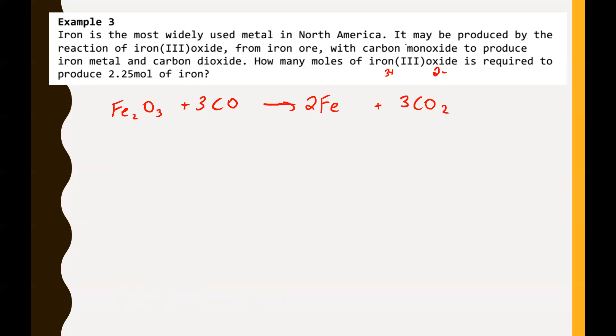We're looking for how many moles of iron three oxide will be required to produce 2.25 moles of iron. We know we have 2.25 moles of this guy right here, and that's going to be the equivalent of two parts. We only have one part of iron three oxide. So to find how many moles of iron three oxide, we just have to take our two parts and divide it by two.